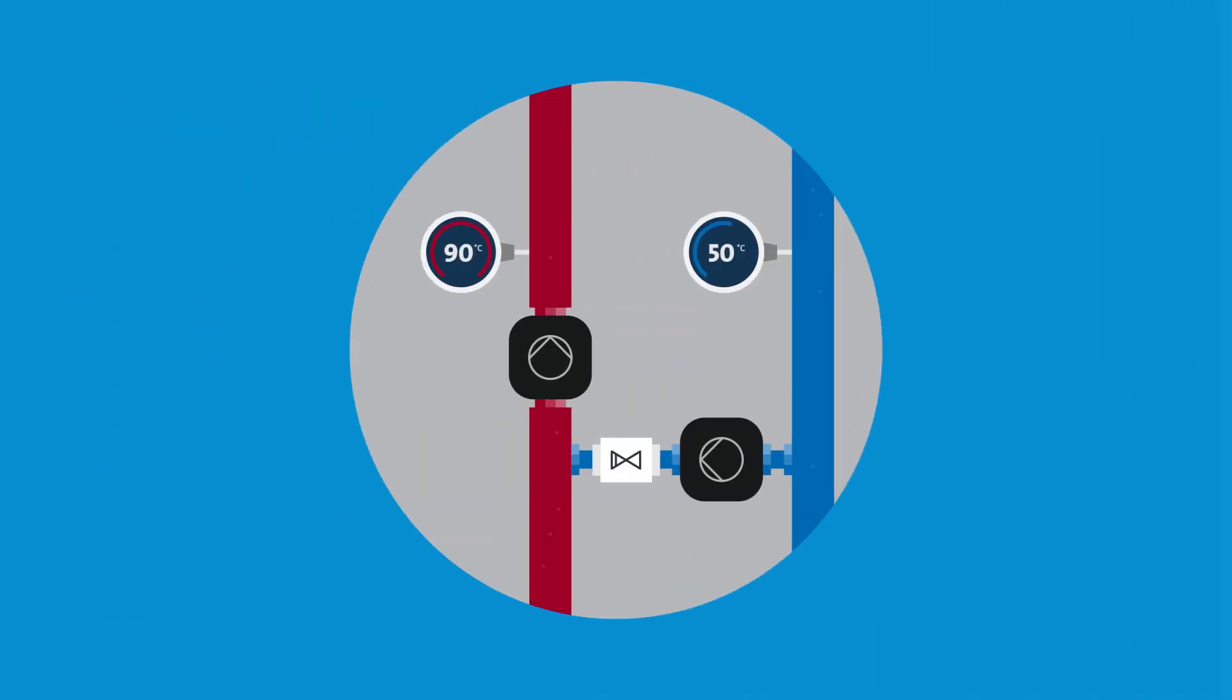Let's take a closer look at the unit. The mixing loop takes water from the return line and injects it into the supply to lower the temperature to the needed level.